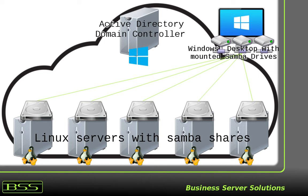We will also use SSSD querying the Active Directory domain controller for Unix attributes of users, such as user ID, group ID, login shell, and home directory. Additionally, we will use a method where SSSD generates home directories, login shell, user ID, and primary group ID according to templates and an algorithm.